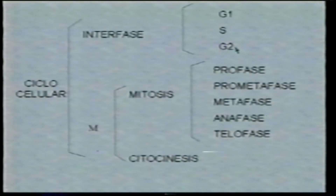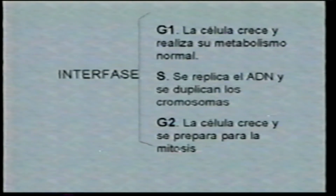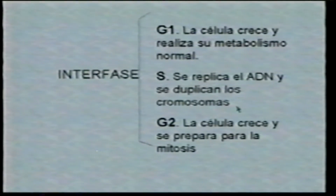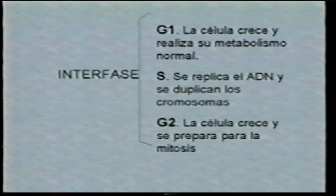¿Qué ocurre en cada una de estas etapas? En G1 la célula crece y se dedica a hacer su actividad normal; si es una célula epitelial realiza su metabolismo normal, si es una neurona, su metabolismo de neurona. En la fase S es cuando se duplica el DNA, entonces duplica su material genético y se prepara para la mitosis. La fase G2 se caracteriza porque la célula prepara también la maquinaria de proteínas que van a ayudarle para entrar a la mitosis. Esto es antes de la mitosis y realmente la célula se está preparando para la división.